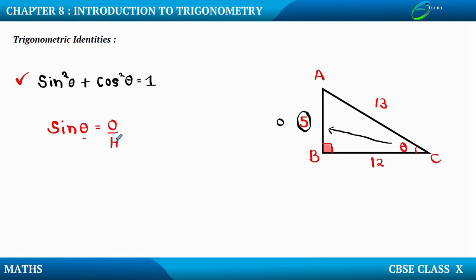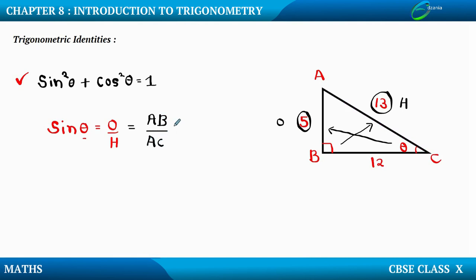The hypotenuse is the side opposite to 90 degrees, which is AC. So sin theta equals O upon H, which is AB upon AC. The value of AB is 5 and AC is 13, so sin theta equals 5 upon 13.